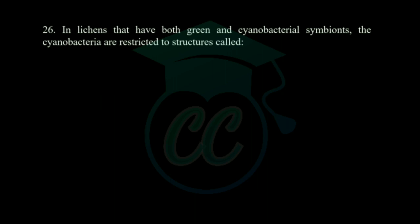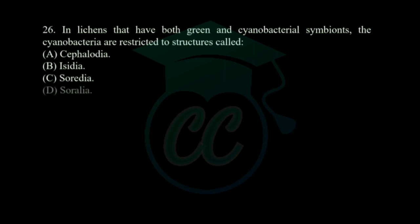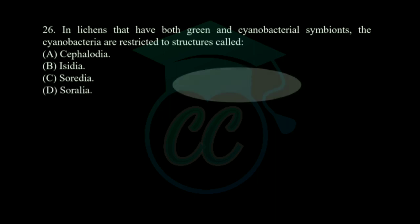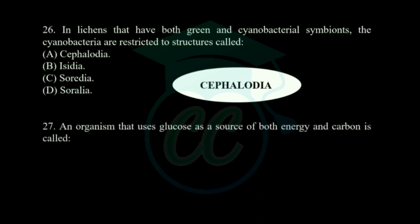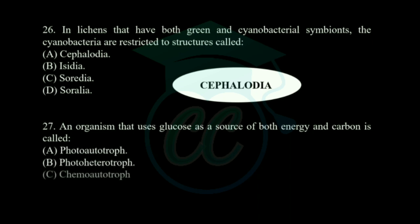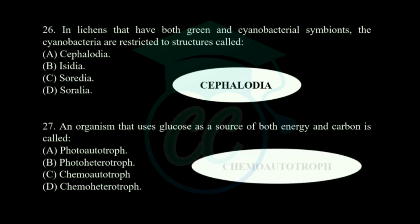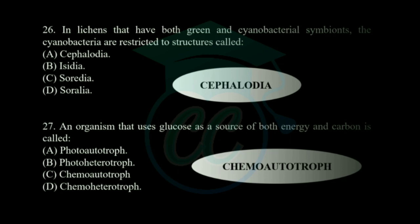Next question: in lichens that have both green algal and cyanobacterial symbionts, the cyanobacteria are restricted to structures called — options: cephalodia, istia, soredia, and soralia. The correct answer is cephalodia. Next question: an organism that uses glucose as a source of both energy and carbon is called — options: phototroph, photo heterotroph, chemo autotroph, and chemo heterotroph. The correct answer is chemo heterotroph.